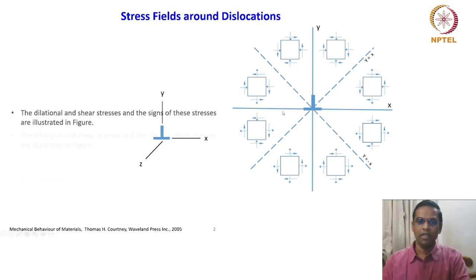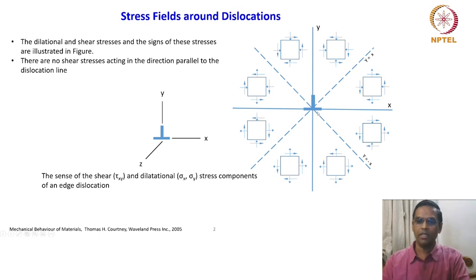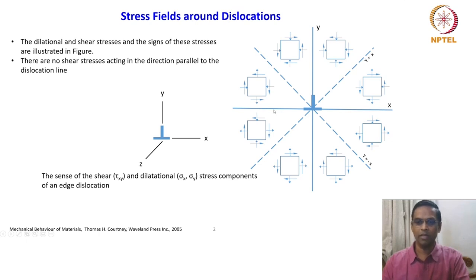We have the idea about what kind of stress field surrounds the edge dislocation. It is quite complicated, but the idea is that above the extra half-plane the state of stress is hydrostatic compression and below it is hydrostatic tension. Along the y-axis it is completely hydrostatic with no shear stresses, but on the x-axis there are no hydrostatic stresses, only shear stresses on both sides.